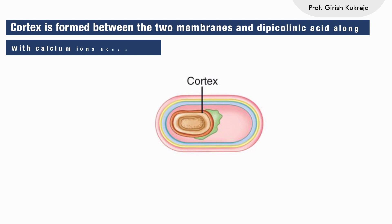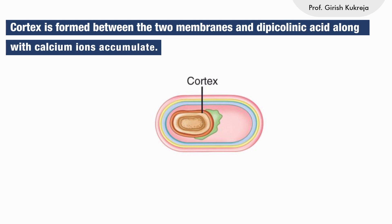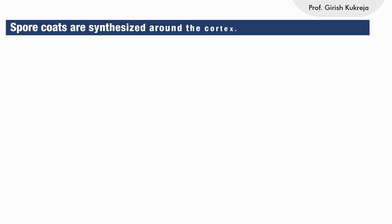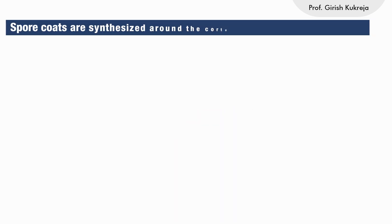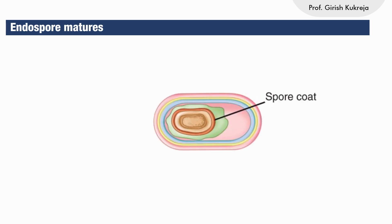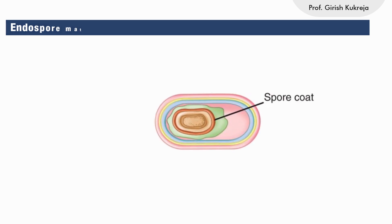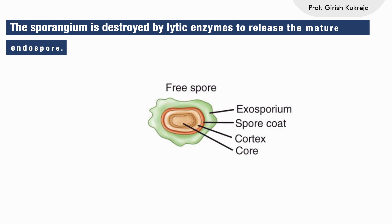A cortex is formed between the two membranes, with dipicolinic acid and calcium ions accumulating. Spore coats are synthesized around the cortex, and the endospore matures. Finally, the sporangium is destroyed by lytic enzymes to release the mature endospore.